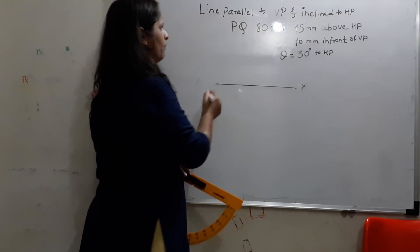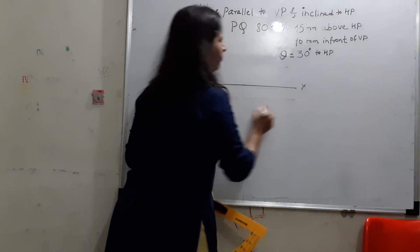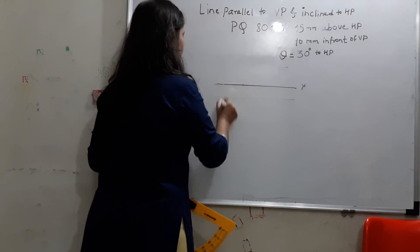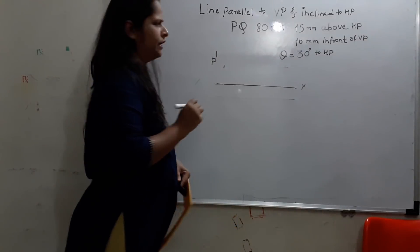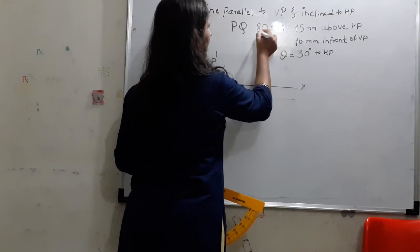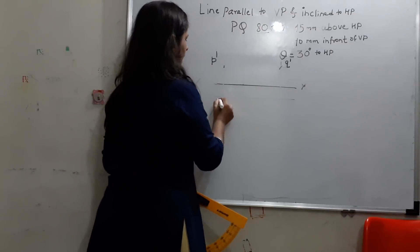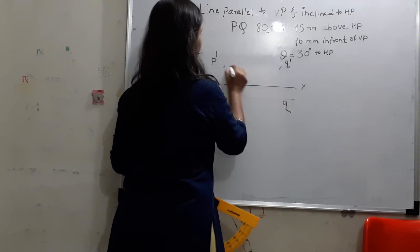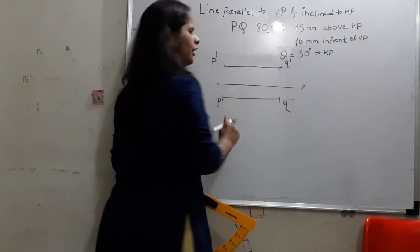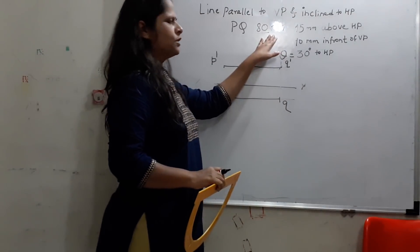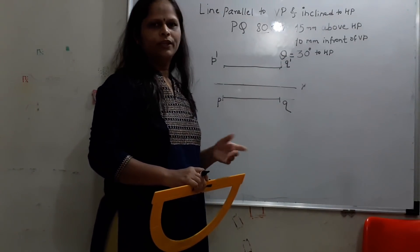How to draw the solution? At 15mm, I will be making a thin line. At 10mm, I will be making one more thin line. I will start with some point and mark this as P-dash, the starting point of the front view. At 80mm, I will mark Q-dash. This gives the top view P and Q. In the first step, while making such a problem, we have to assume that the line is parallel to both reference planes, then we will go for the inclination.